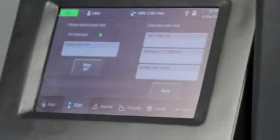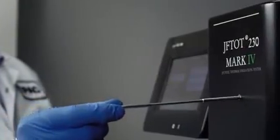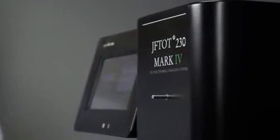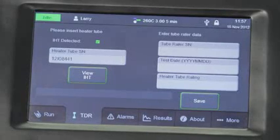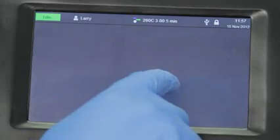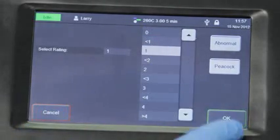Next go to the TDR tab. If you used an intelligent heater tube like this one, insert the IHT into the reader slot located at the top of the instrument. The IHT serial number will automatically populate in the serial number field. Select the tube rating from the drop down menu, press OK, and then press the save button.